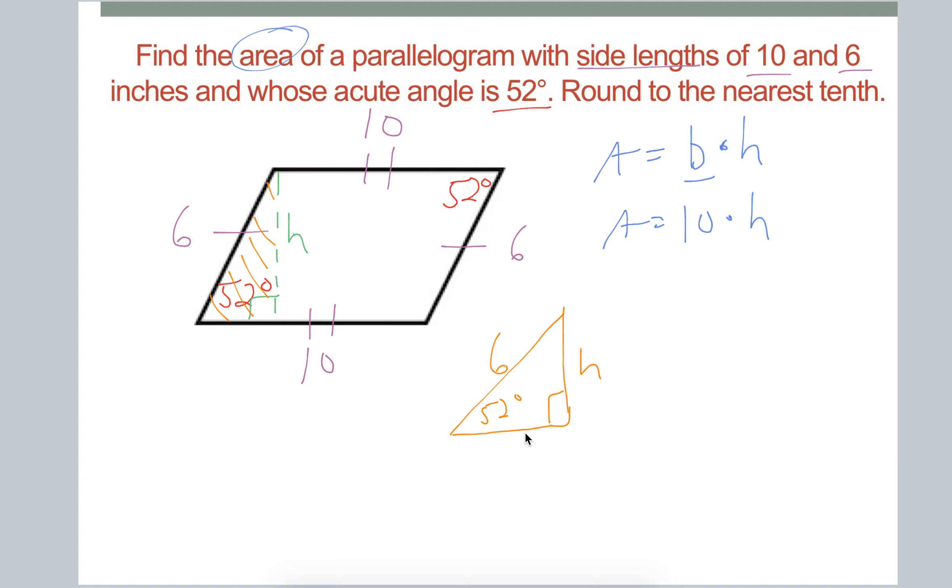So now think about SOHCAHTOA, which is what I'm talking about when I'm talking about trig. So according to this angle, 52, we have the opposite, which is H, and the hypotenuse, which is 6, which means we're going to use So, the So part of SOHCAHTOA. So sine of 52 is equal to opposite, which is H over hypotenuse, which is 6.